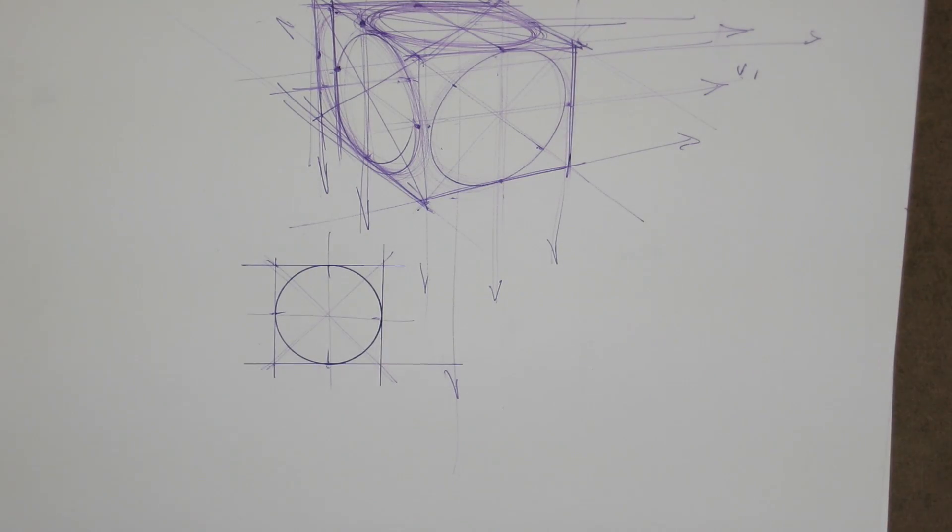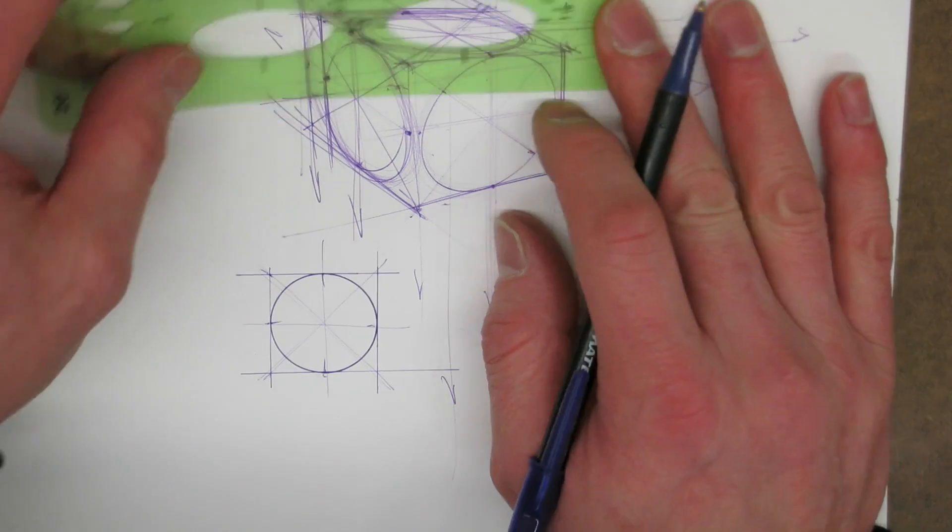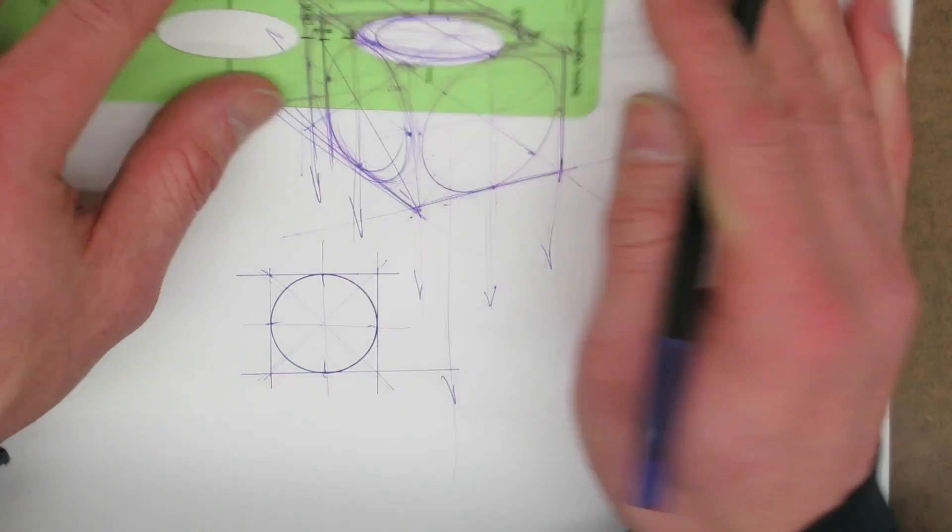get an ellipse template here to sort of verify everything as well to show how that's pointing down. Looks like it's about a 20 degree ellipse. I'm ghosting that in, you can see the short axis goes straight down to the vanishing point at the bottom.